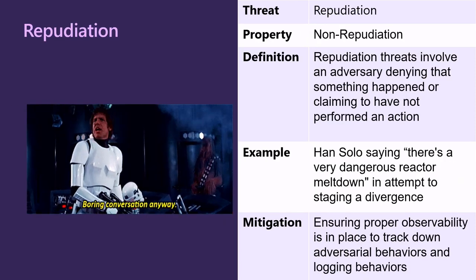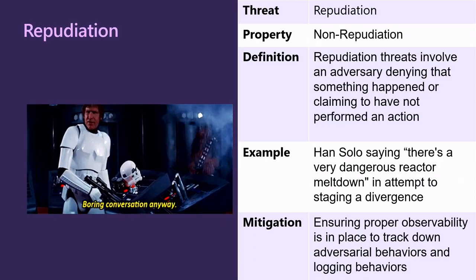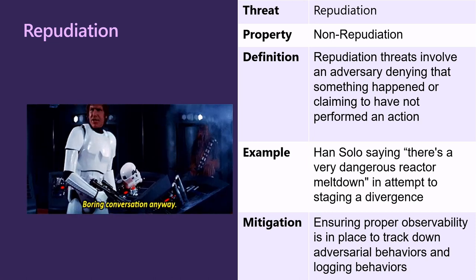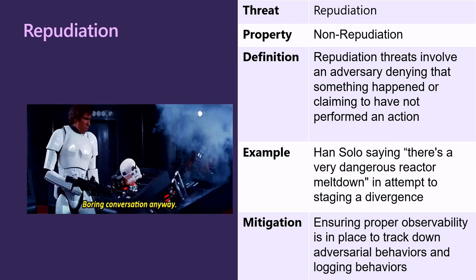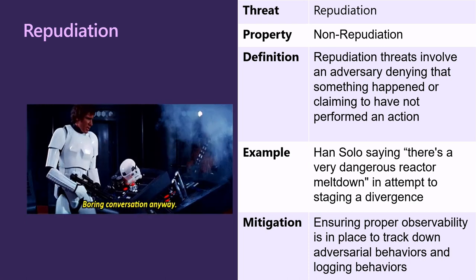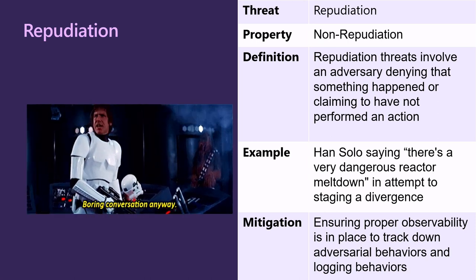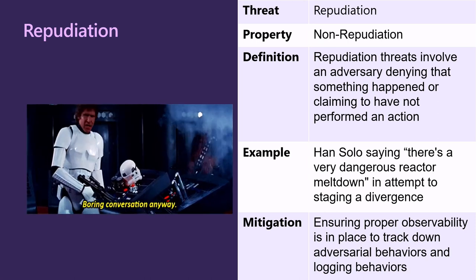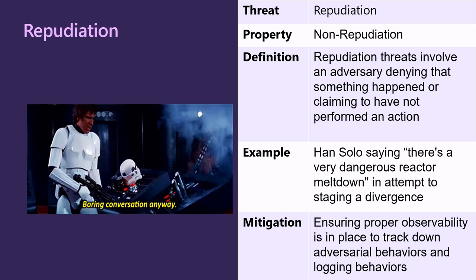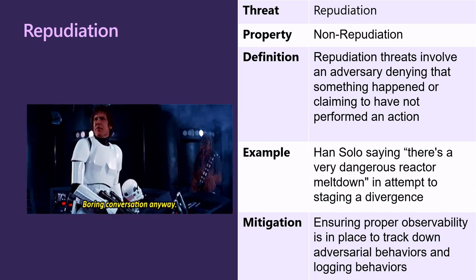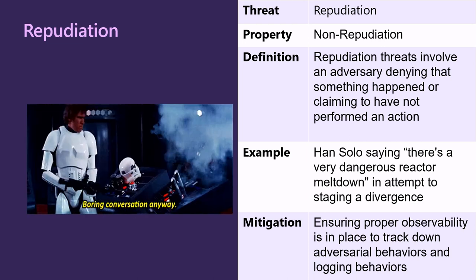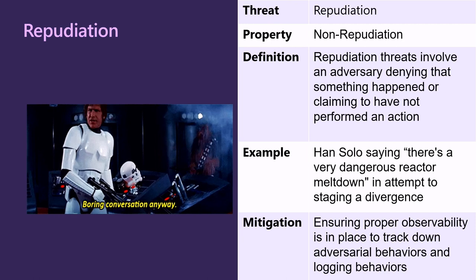R is for Repudiation — the property of non-repudiation. Repudiation threats involve an adversary denying that something happened or claiming not to have performed an action. In our example, Han Solo claiming there's a very dangerous reactor meltdown happening in an attempt to stage a diversion to save the princess. A possible mitigation could include ensuring proper observability is in place to track down adversarial behaviors and logging those behaviors.